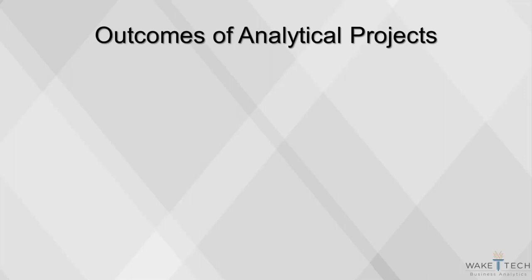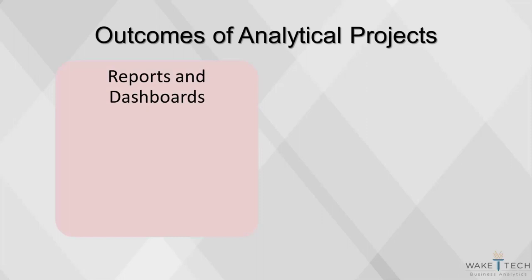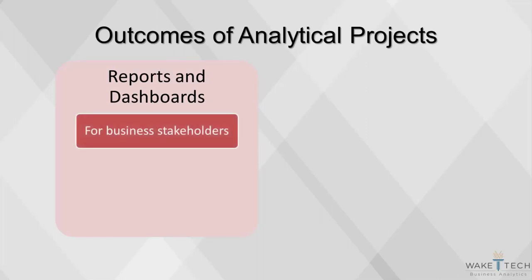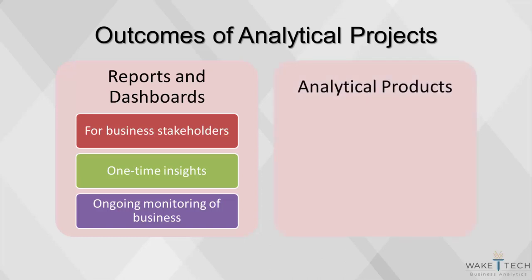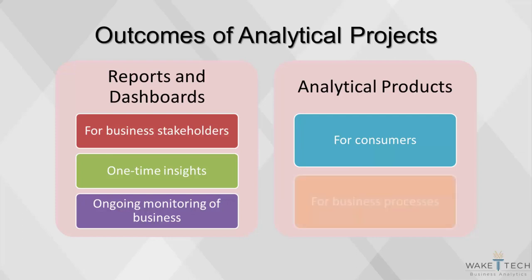There are many different goals that an analytics project can strive for. The first category is providing information about a business—such as reports, dashboards, and presentations—for business stakeholders. Reports or presentations provide one-time insights to explain events that have occurred and predict future events, while dashboards are used for ongoing monitoring of key aspects of the business. The second category is the production of analytical products, where the business's data becomes the input for a complex process that automatically produces an action. For instance, Amazon has an automated algorithm that determines products you might like to buy. Analytical products can also make internal business processes more efficient—for example, credit card companies test every transaction for the probability of fraud.